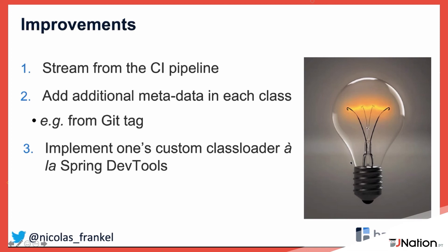If you want to know exactly what's running in production, you can inject git tag metadata as additional metadata. And to remove the limitation of redefineClasses — not being able to add attributes or change method signatures — you could implement a custom class loader. Spring Dev Tools uses two class loaders: one for libraries that never changes, and one for your classes that gets restarted when an incompatible change is detected, keeping the JVM up for very fast restarts.